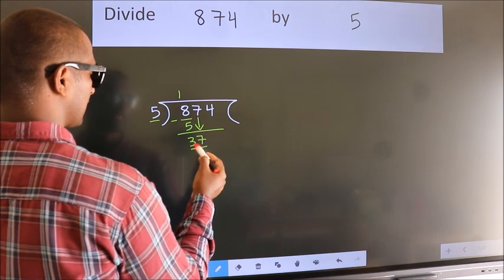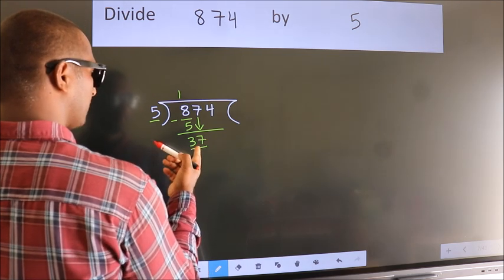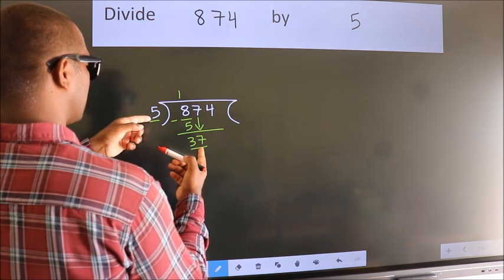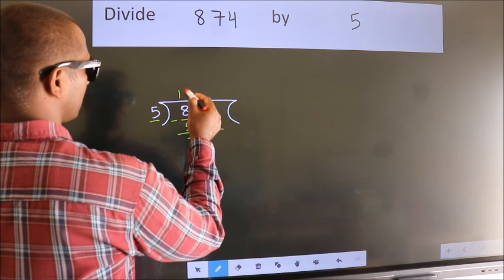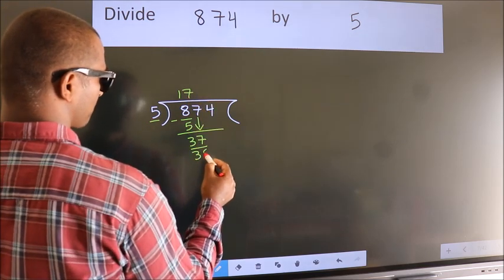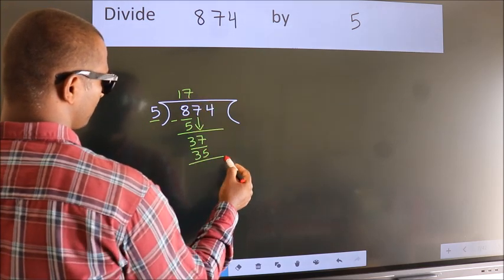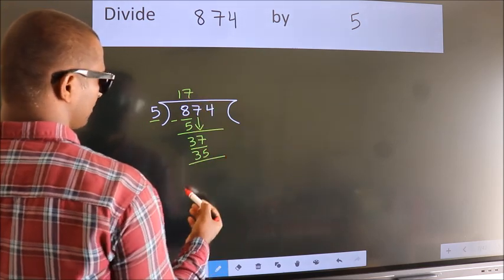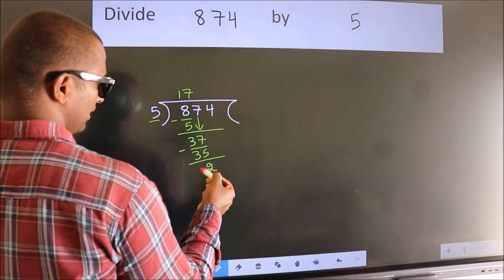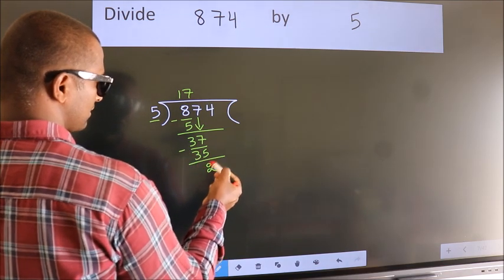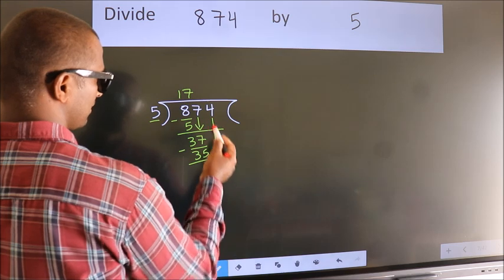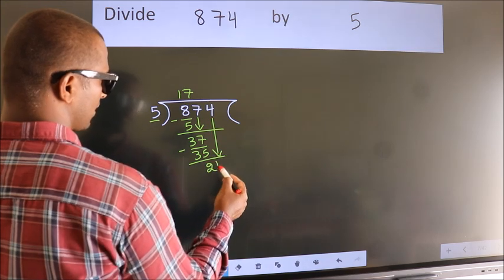So we have 37. A number close to 37 in the 5 times table is 5 sevens, which is 35. Now we subtract — we get 2. After this, bring down the beside number, so 4 comes down.